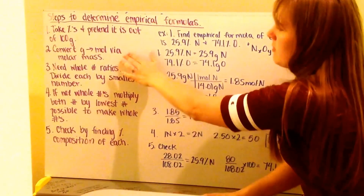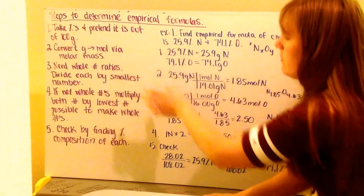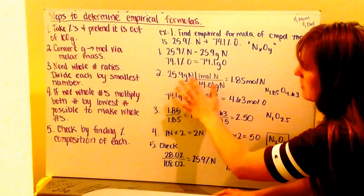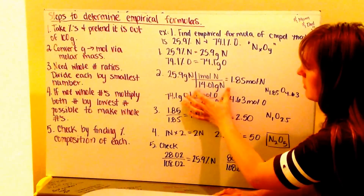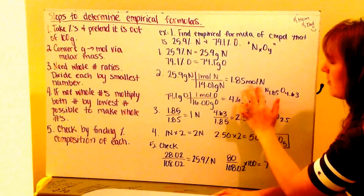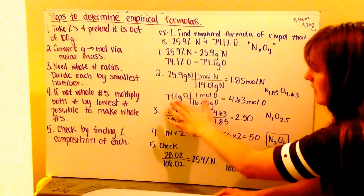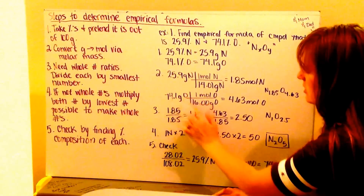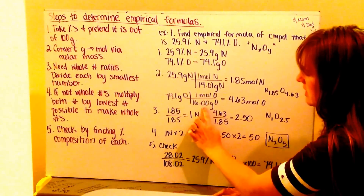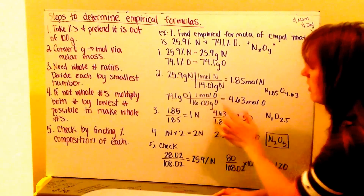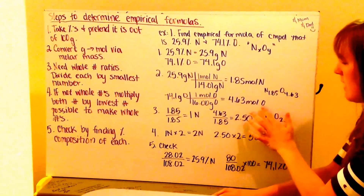Step two: convert my grams to moles via molar mass. My 25.9 grams of nitrogen divided by the molar mass of nitrogen, 14.01 grams per mole, gives me 1.85 moles of nitrogen. For oxygen, 74.1 grams divided by its molar mass of 16.00 grams per mole gives me 4.63 moles of oxygen.